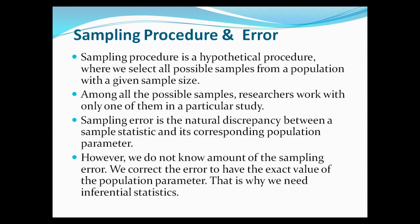Sampling procedure is a hypothetical or imaginary procedure where we select all possible samples from a population within a given sample size. It's almost like a thought procedure, but you can simulate data. Among all these possible samples, researchers work with only one of them in a particular study, because as a researcher you can only collect so many samples — usually just one sample of all the possible samples that could exist.